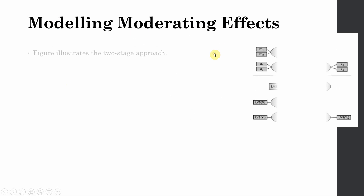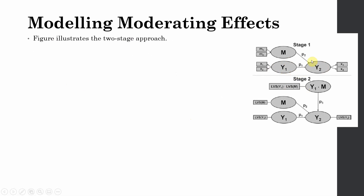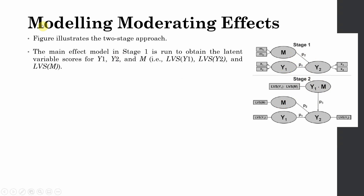This figure illustrates the two-stage approach we are going to use for moderation analysis. Stage one is the main effect model, and stage two includes the moderating effect. The main effect model in stage one shows the impact of the moderator on the dependent variable and the impact of the independent exogenous variable on the dependent variable. This two-stage approach is recommended for modeling moderating effects.